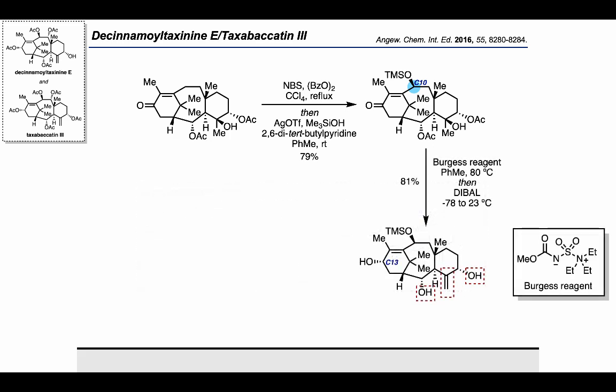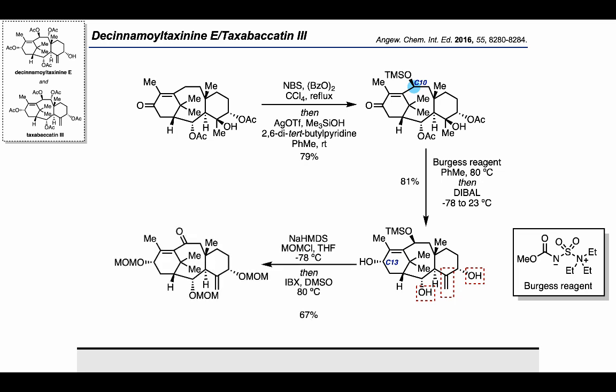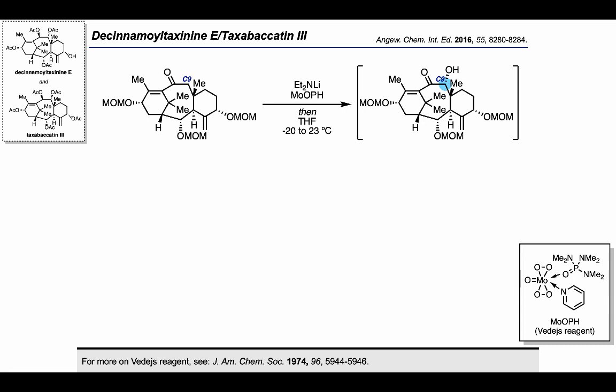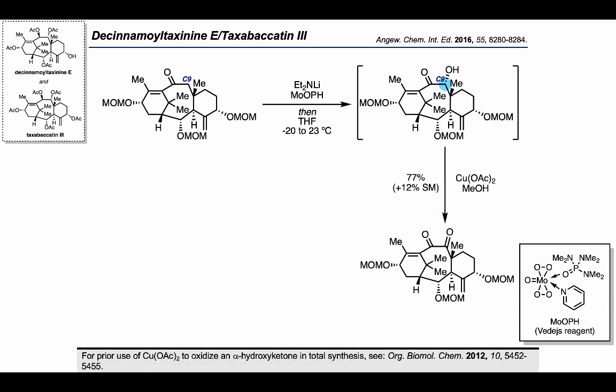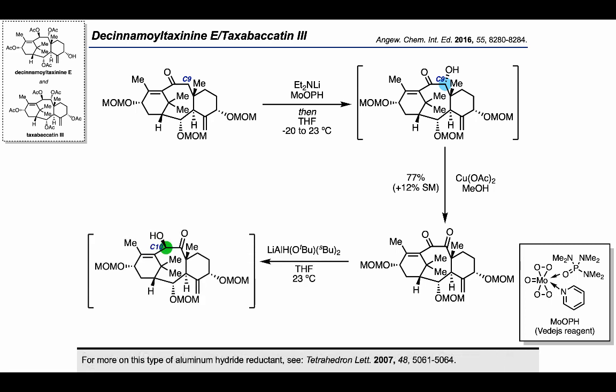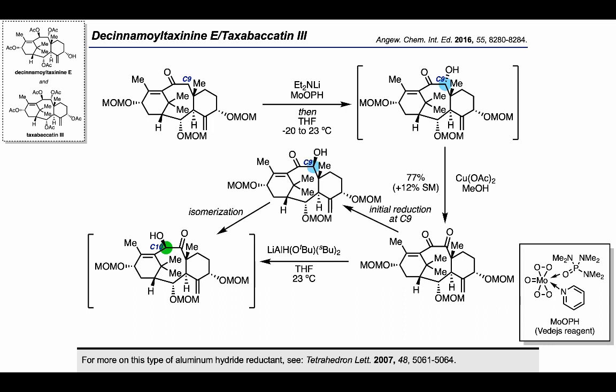The authors continued by using Burgess reagent to dehydrate the tertiary alcohol. Subsequent treatment with DIBAL resulted in reduction of the ketone at C13 to the corresponding secondary alcohol with the desired stereochemistry; additionally, both acetate groups were removed in this process, resulting in a product bearing three unprotected alcohols, all of which were protected in the next step using sodium HMDS and MOM chloride. IBX and DMSO could then be used to convert the TMS-protected alcohol at C10 into a ketone — a useful handle for installing the remaining carbon-oxygen bond at C9. The authors generated an enolate and used Davis' reagent to generate an alcohol at C9; subsequent treatment with copper acetate led to the 1,2-dione product. Treatment with a lithium aluminum hydride reductant resulted in net reduction at C10 — the initial site of reduction is actually C9, but a subsequent isomerization leads to the product with an alcohol at C10 and a ketone at C9.